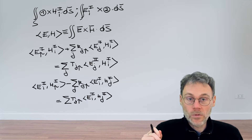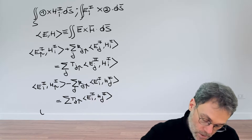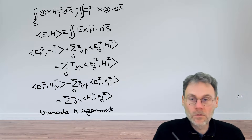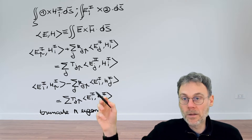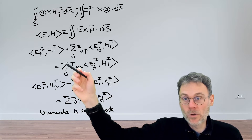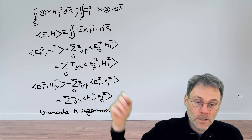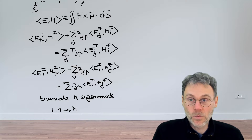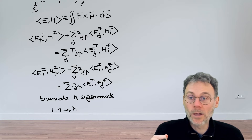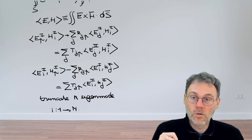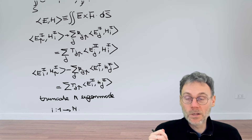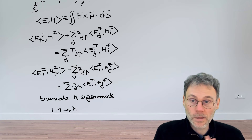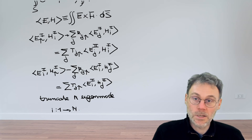This looks very promising. Rather than keeping an infinite sum, we truncate our series expansion at N eigenmodes. With N eigenmodes, we can apply this game for N different values of i, giving two equations per value of i — so in total two N equations for two N unknowns: N reflection coefficients and N transmission coefficients. We've reduced the problem of finding reflected and transmitted fields to a linear algebra problem. There are some further tricks to simplify this, but that's the subject of a next video.